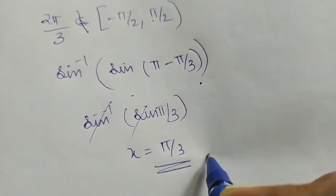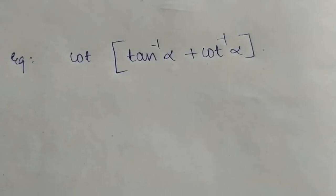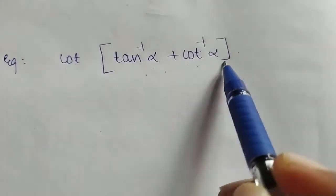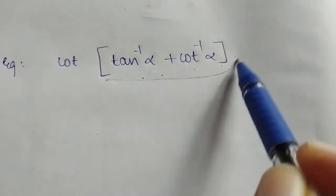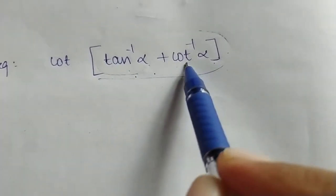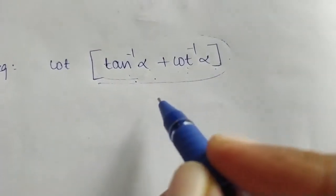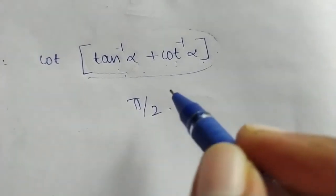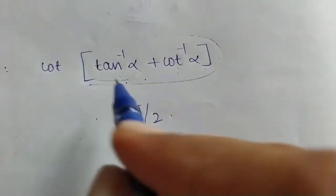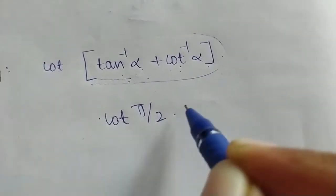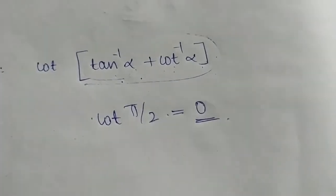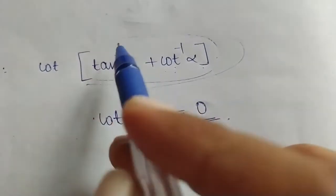Example: find cot(tan inverse α + cot inverse α). Using the property tan inverse x + cot inverse x = π/2, the expression becomes cot(π/2). Cot(π/2) = 0. So the value is 0.